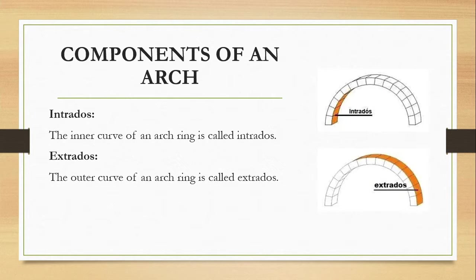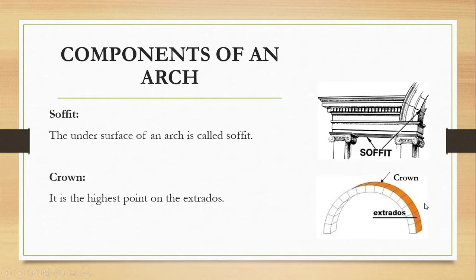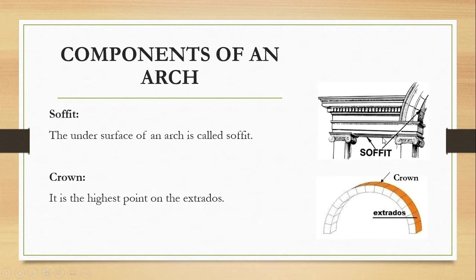Intrados and extrados: the inner curve of the arch ring is termed the intrados, and the outer curve is termed the extrados. Soffit is the undersurface of an arch. For a curved arch, the underside of the continuous curve is the soffit, and for a straight flat arch, the underside is also termed the soffit.